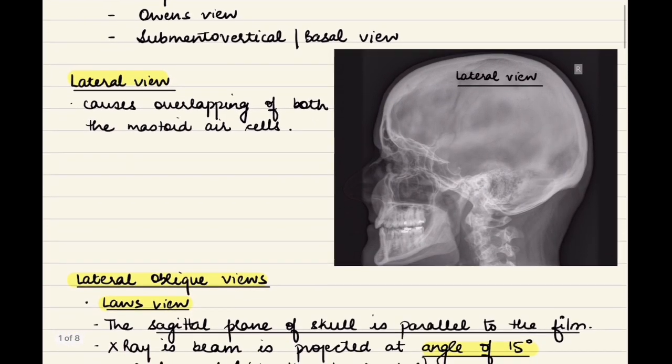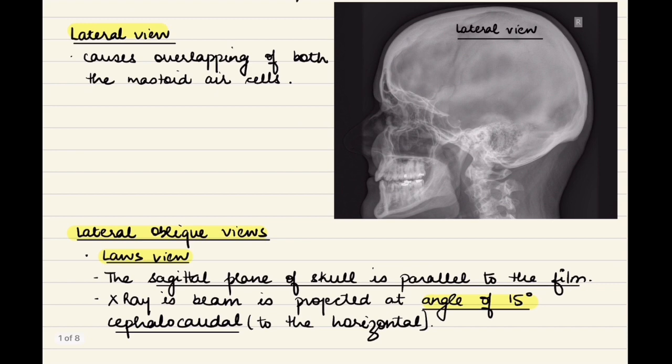Taking up the lateral view first. In the lateral view the x-ray beams are projected parallel to the horizontal. When we are doing this view it causes overlapping of both the mastoid air cell systems, that is both the right and left side. For example, this is a diagram of the right side showing the mastoid air cells, but because there is overlapping it is difficult to differentiate which ones are from the right side and which is the projection from the left side.